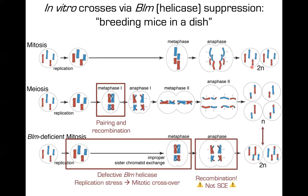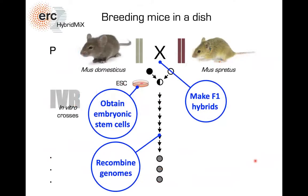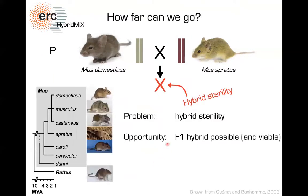One gene called bloom helicase, if you suppress its function, acts during both mitosis and meiosis in resolving double-strand breaks — known as a guardian of the genome. If you suppress the gene function, it leads to sometimes improper sister chromatid exchange during mitosis, and every now and then you get mitotic recombination between homologous chromosomes — ending up with mitosis but recombined chromosomes in daughter cells. This provides a way to shuffle up the genome, enabling genetic mapping using this in vitro recombination approach.